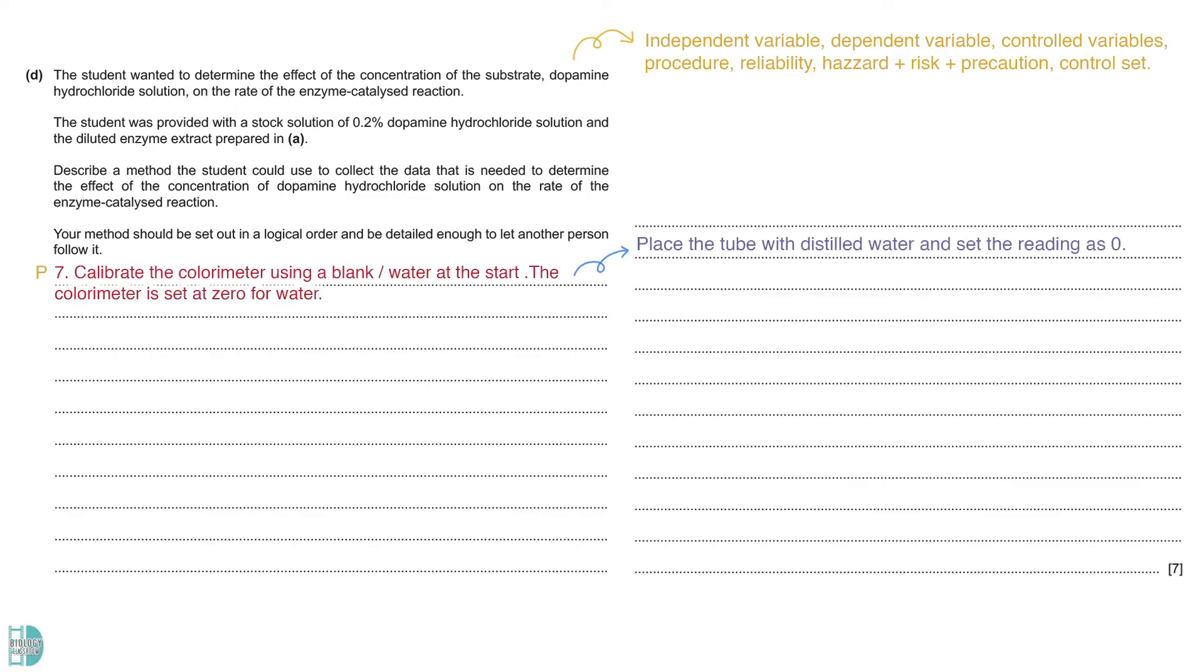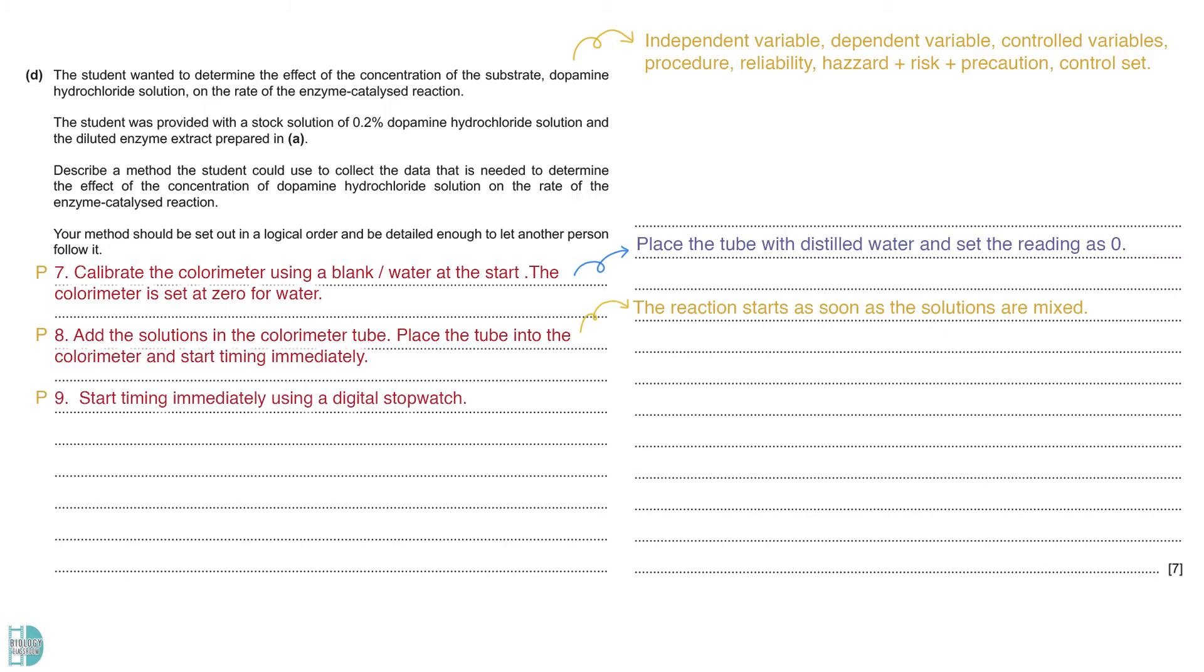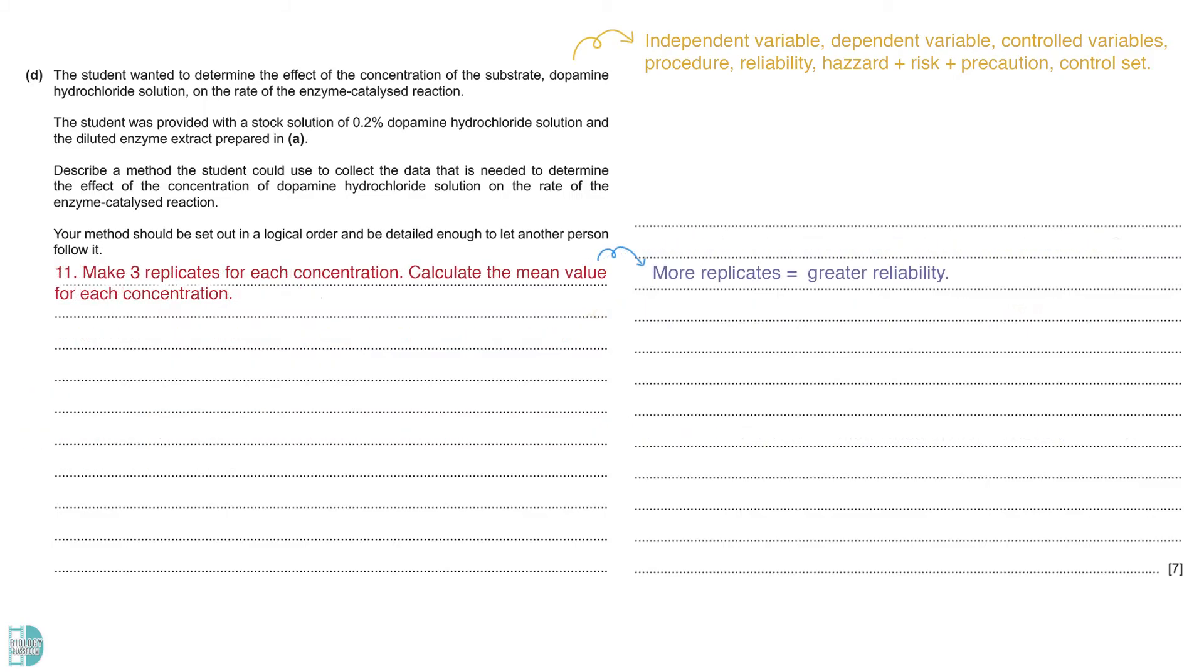Before a calorimeter is used to measure the absorbance, we have to calibrate it. You can do this by using a blank or a tube that only contains water. Place this tube into the device and set it as zero. After that, we can mix the solutions in the calorimeter tube. The reaction starts right away, so we must place the tube into the calorimeter immediately. A digital stopwatch is used to time the reaction. Then, describe how the dependent variable is measured. The absorbance is measured at set time intervals for a fixed total length of time. You can use the intervals that were mentioned in the previous question. Make three replicates for each concentration and calculate the mean values for each of them. This is to increase the reliability of the data.